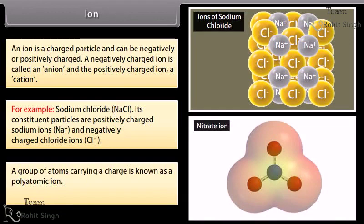A group of atoms carrying a charge is known as polyatomic ion. Example: nitrate ion.